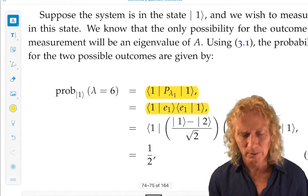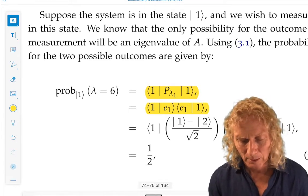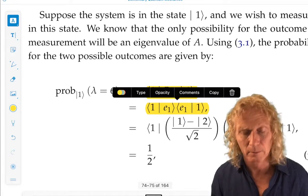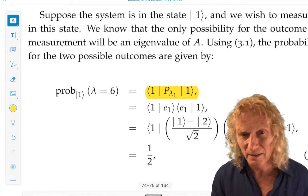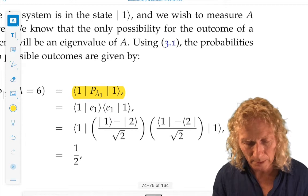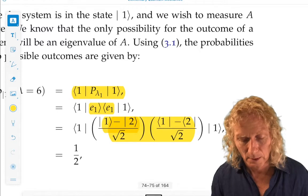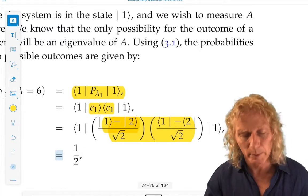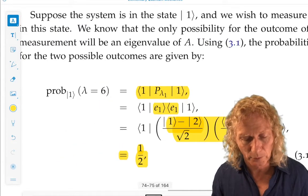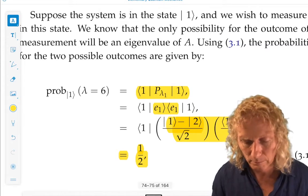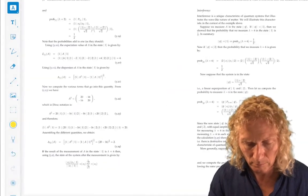So you have mixed bras and kets between two different bases here. But the calculation has to be done in the same basis. Pick your favorite. So, pick ket E1, ket E2, write down their expressions in terms of the basis ket 1, ket 2. And you can do this calculation and you get the probability for computing λ = 6 in the state ket 1 is a half.